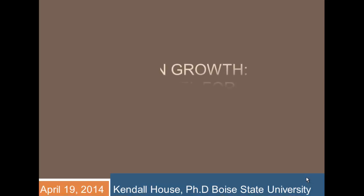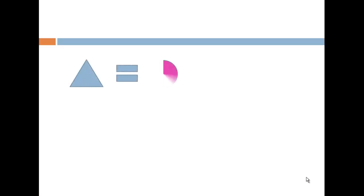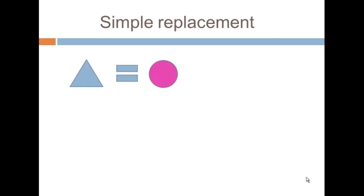Welcome back. This presentation is called 'Population Growth: A Simple Model for the Big Boom.' We're going to start with what's called simple replacement, where one generation simply replaces the prior.